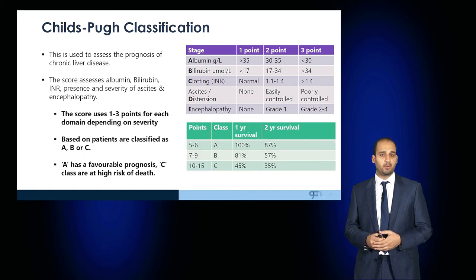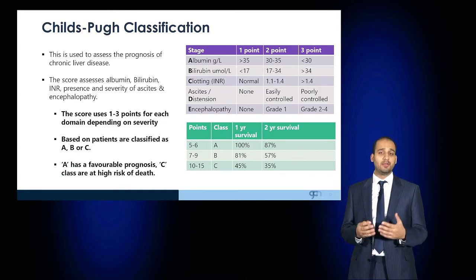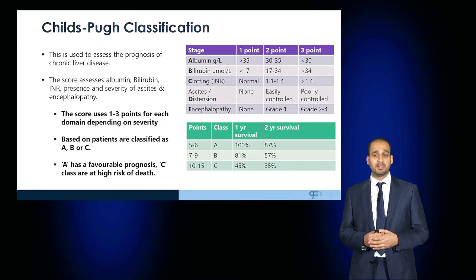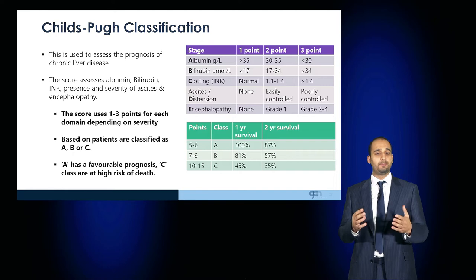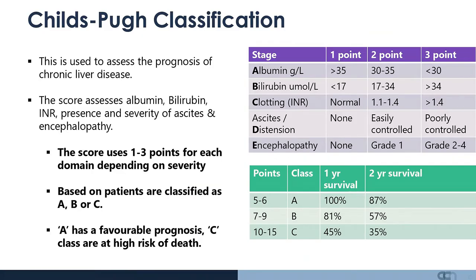A score of five to six classifies the patient as Child-Pugh A, with a predicted one-year survival of 100% and two-year survival of 87%. Through to Class C, where patients score 10 to 15, the prognosis is poor: expected one-year survival is 45% and two-year survival is only 35%.